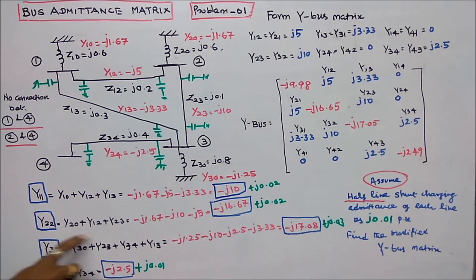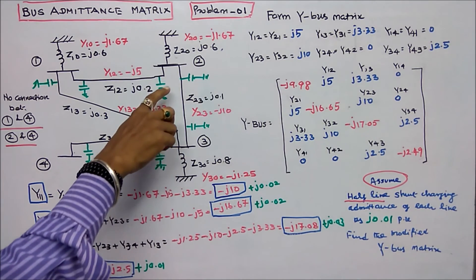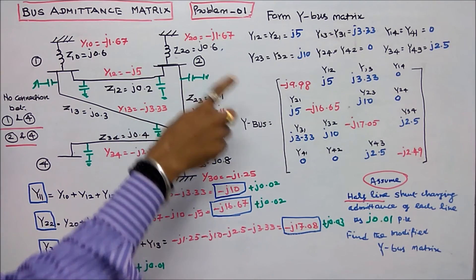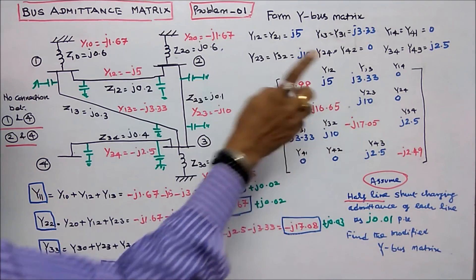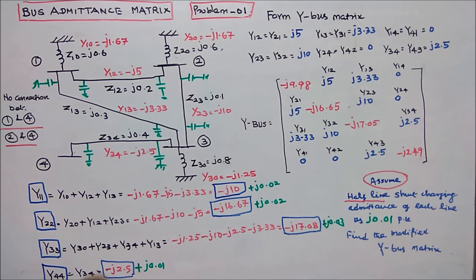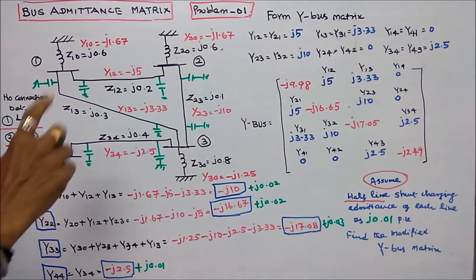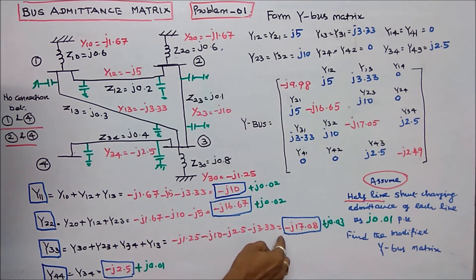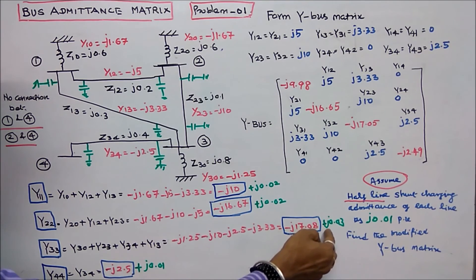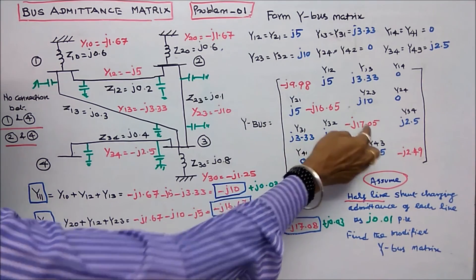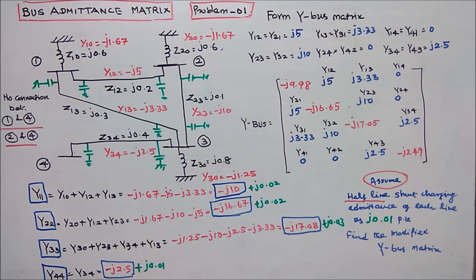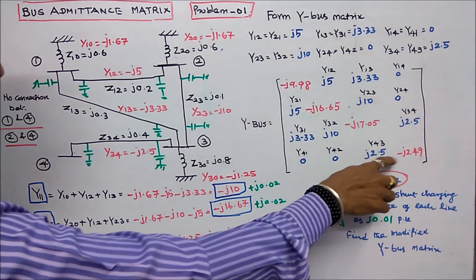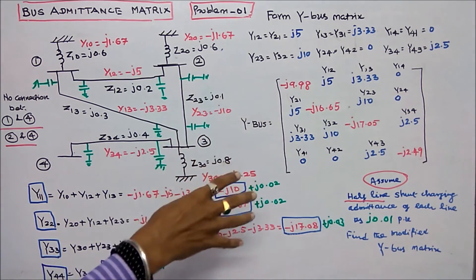Y22 = −j16.67 + j0.01 + j0.01 = −j16.65. Y33 has three lines connected, so we add 3 × j0.01: −j17.08 + j0.03 = −j17.05. Y44 has one element, so −j2.5 + j0.01 = −j2.49. This is the modified Y bus matrix.